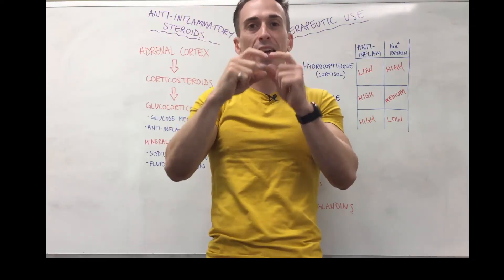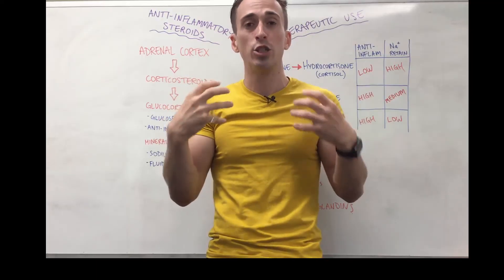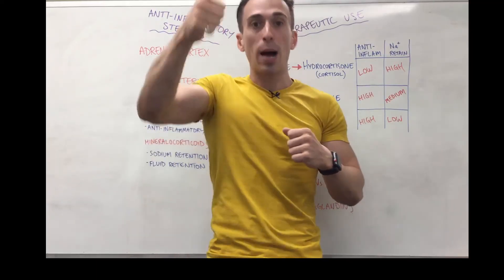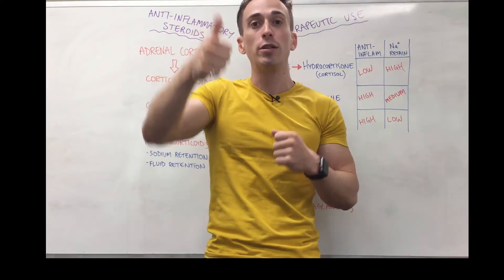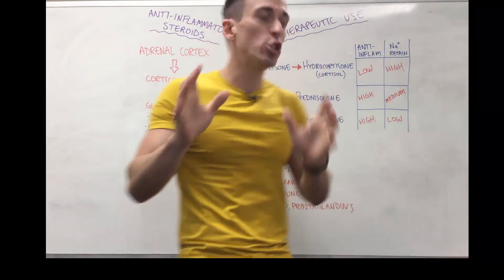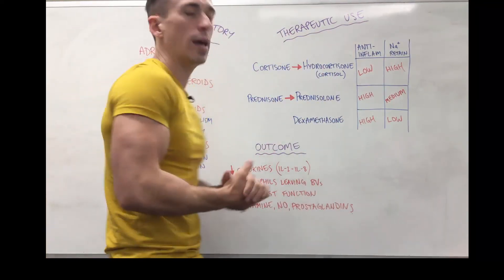And tells between 200 to 300 genes within our genome to either increase their transcription—so start making them, turning them into proteins—or down-regulating, stopping them from being made and turned into proteins. And like I said, some of these genes are those of the cytokines and those of all these pro-inflammatory chemicals.